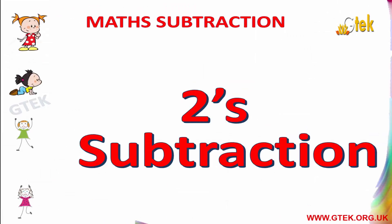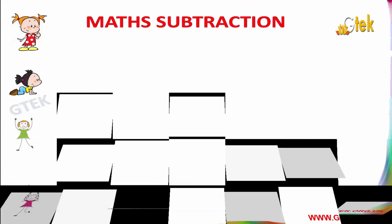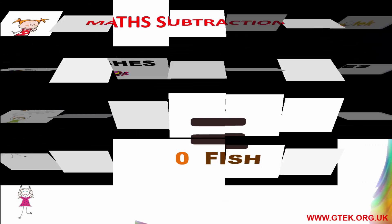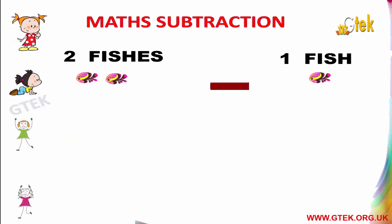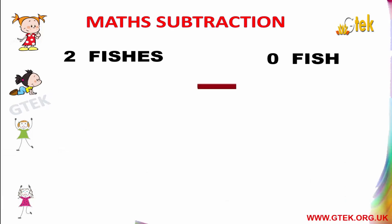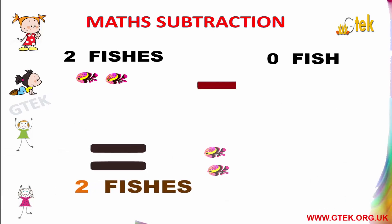Now let us see about the 2's subtraction. 2 fishes minus 2 fishes equals 0 fish. 2 fishes minus 1 fish equals 1 fish. 2 fishes minus 0 fish equals 2 fishes.